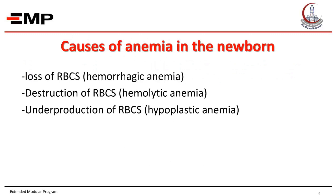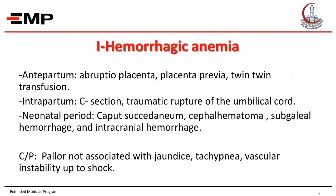Causes of anemia in the newborn: either loss of red blood cells called hemorrhagic anemia, destruction of red blood cells called hemolytic anemia, or underproduction called hypoplastic anemia. Hemorrhagic anemia may happen in the antepartum period as abruptio placenta, placenta previa, or twin-twin transfusion; intrapartum due to C-section or traumatic rupture of the umbilical cord; or in the neonatal period as caput succedaneum, cephalhematoma, subgaleal hemorrhage, and intracranial hemorrhage.